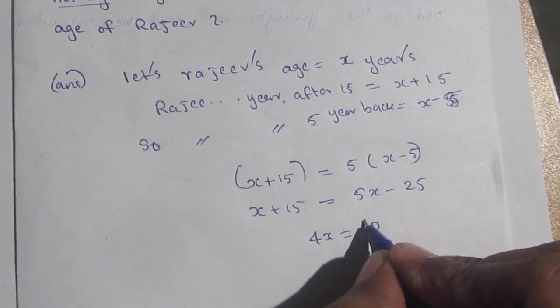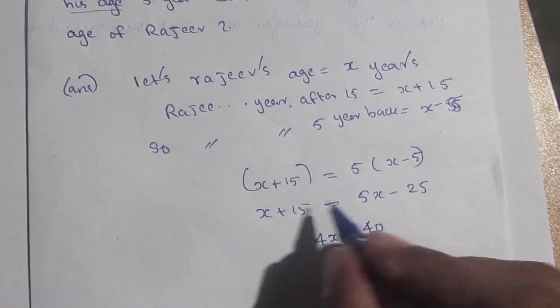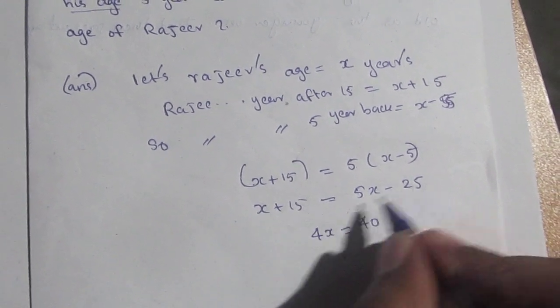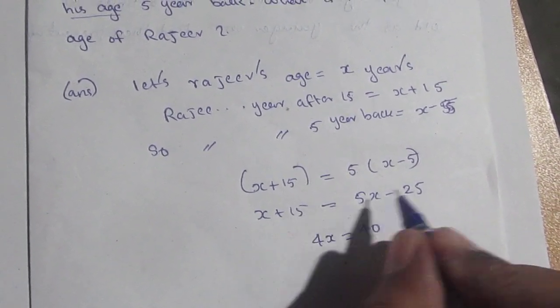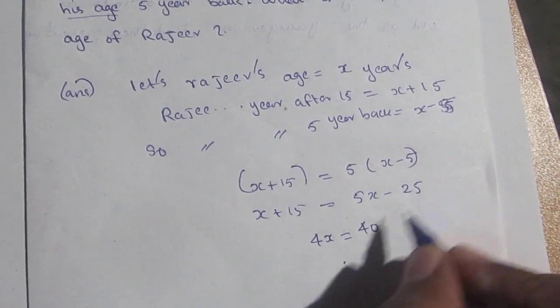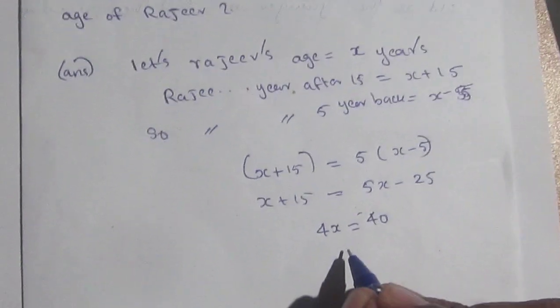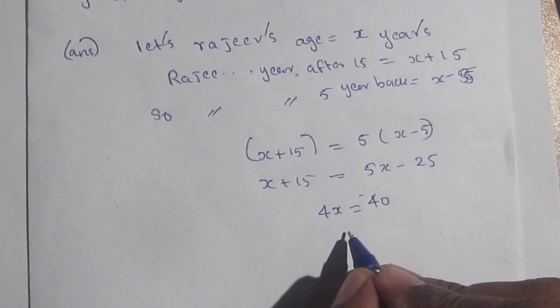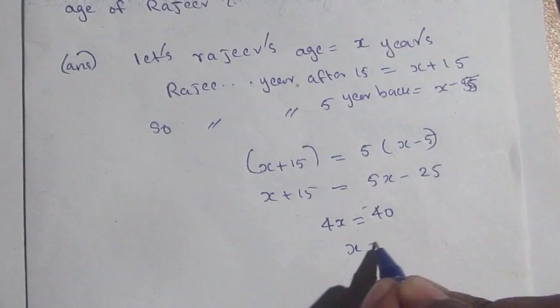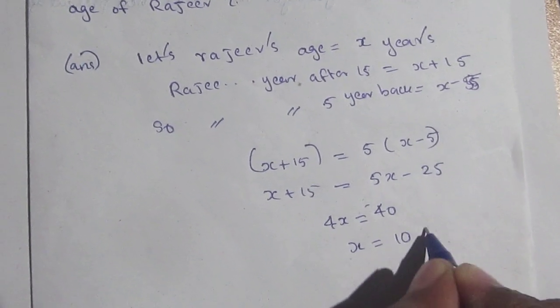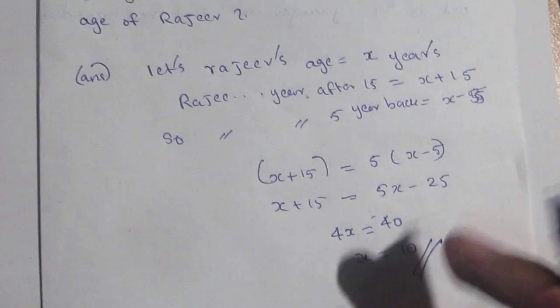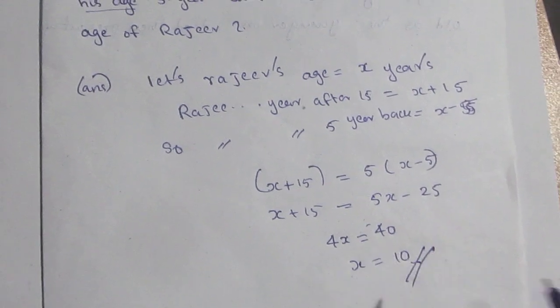So we get 4X is equal to 25 plus 15, which is 40. Therefore X is equal to 10. This is the answer. In problems on age there is no minus, so X equals 10.